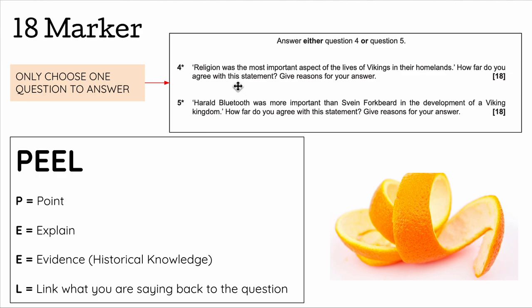Finally, you will have a choice of 18-marker — choose wisely. Spend a minute reading both questions and thinking about which one you can most easily answer. For an 18-marker, we're aiming for a short introduction of a couple of lines, four paragraphs, and a clinching argument. However, if you're really struggling, do at least one paragraph for the argument and one against, plus your clinching argument — you can get up to 15 marks doing that.